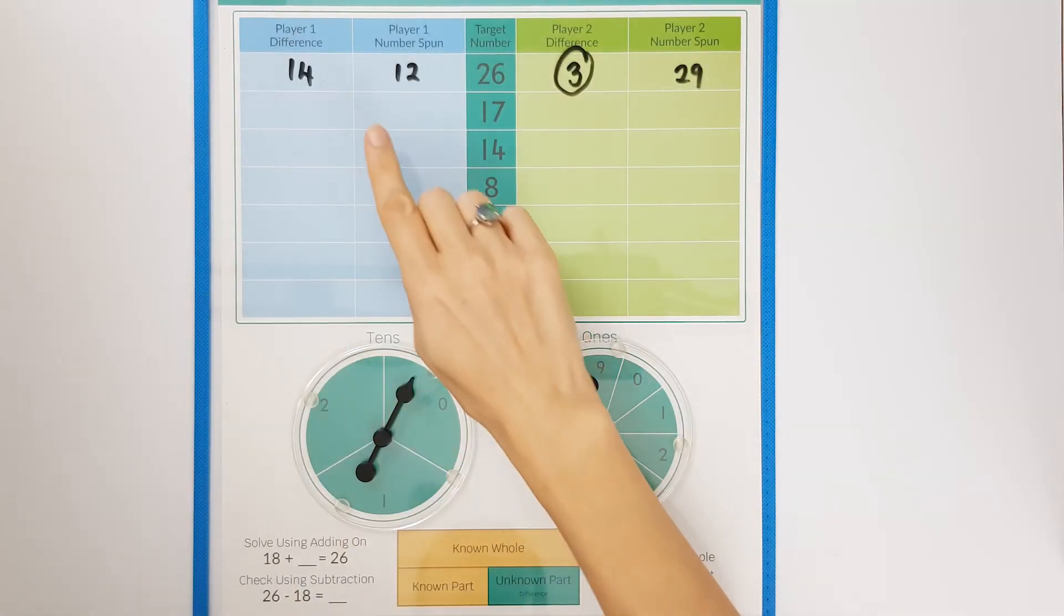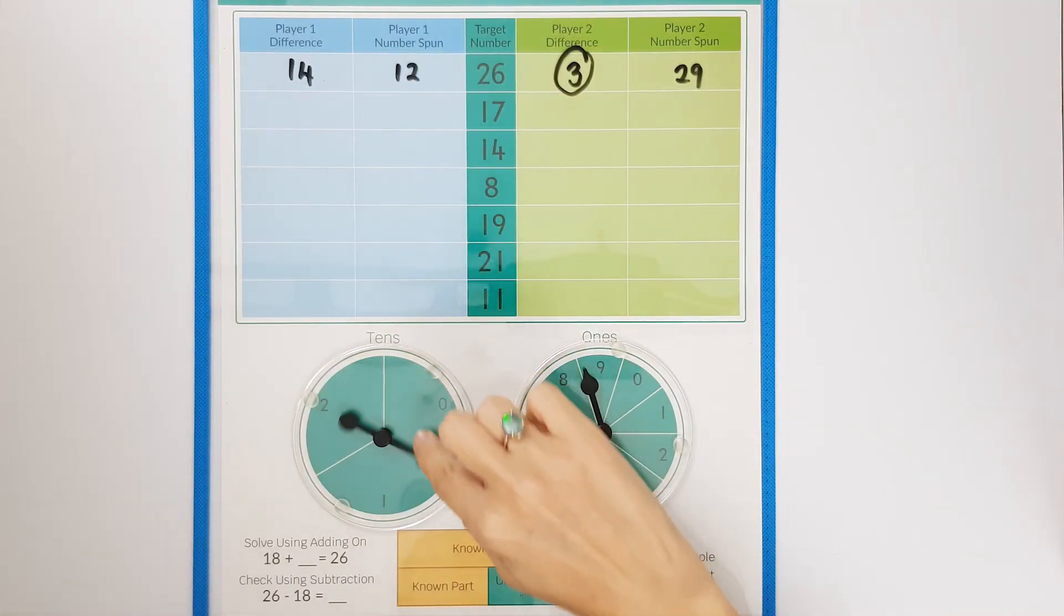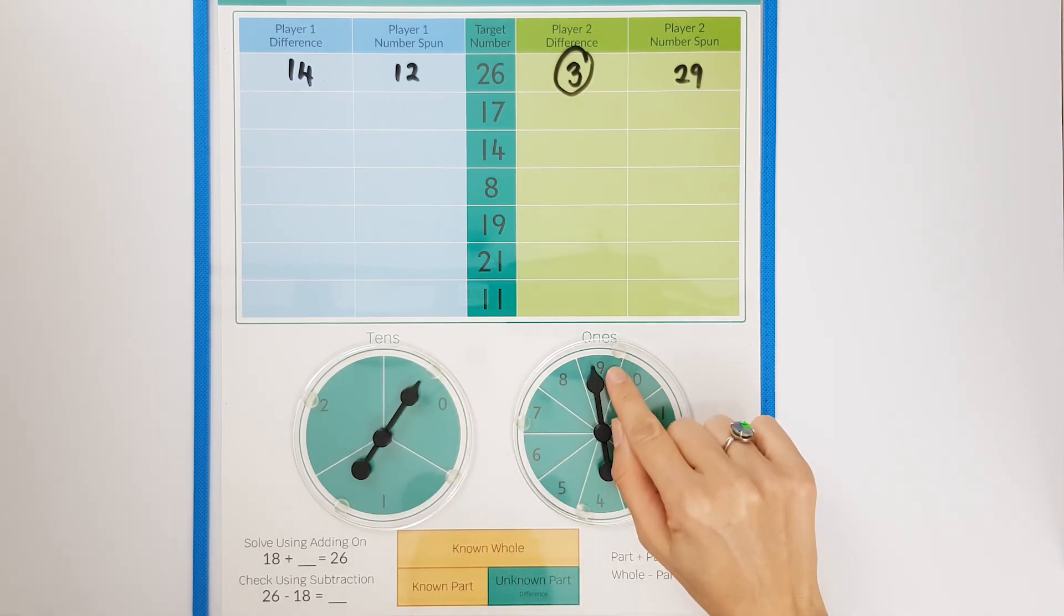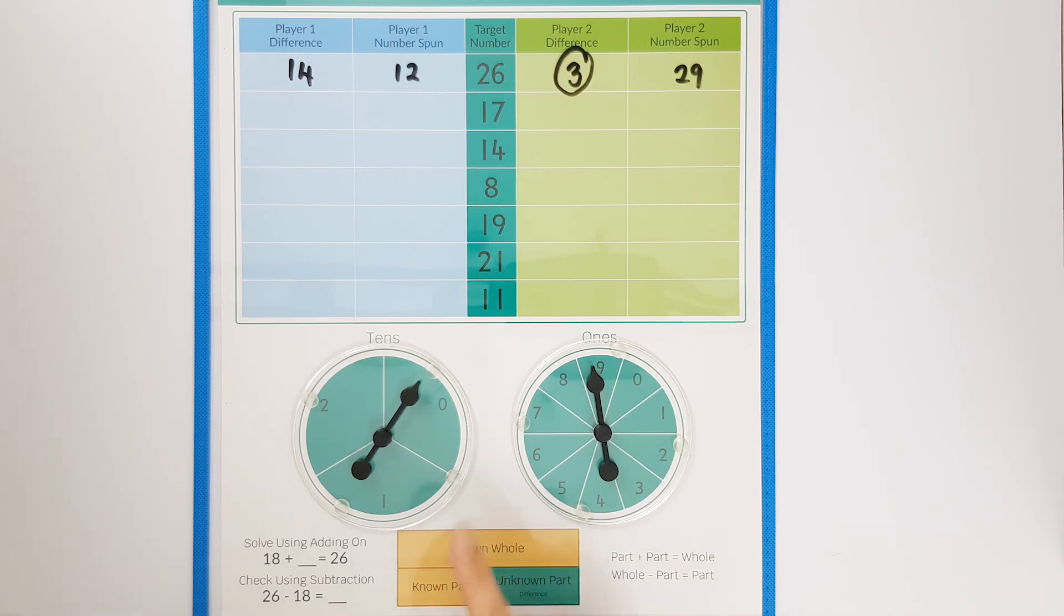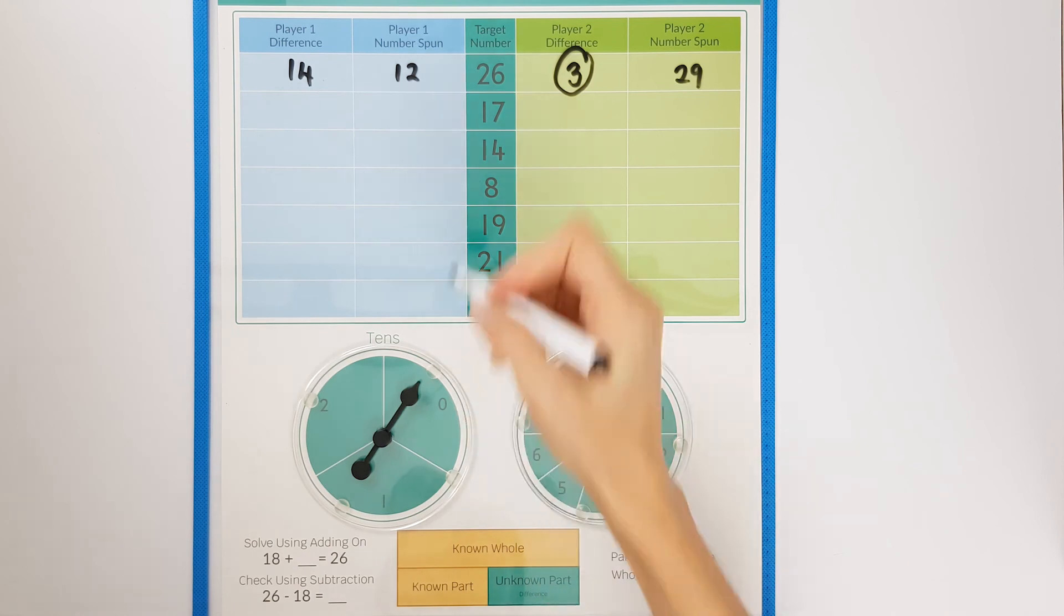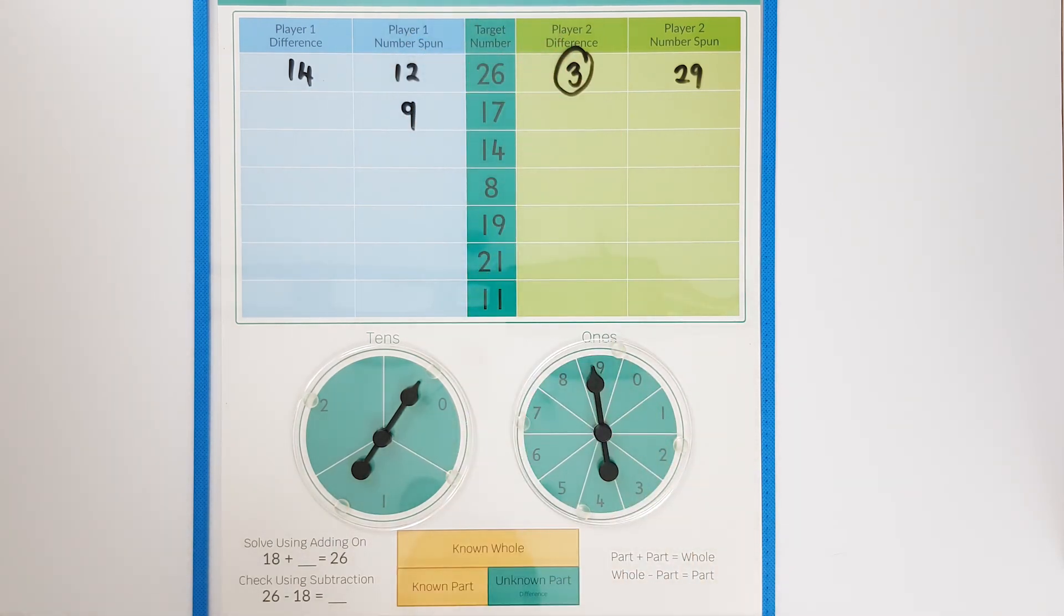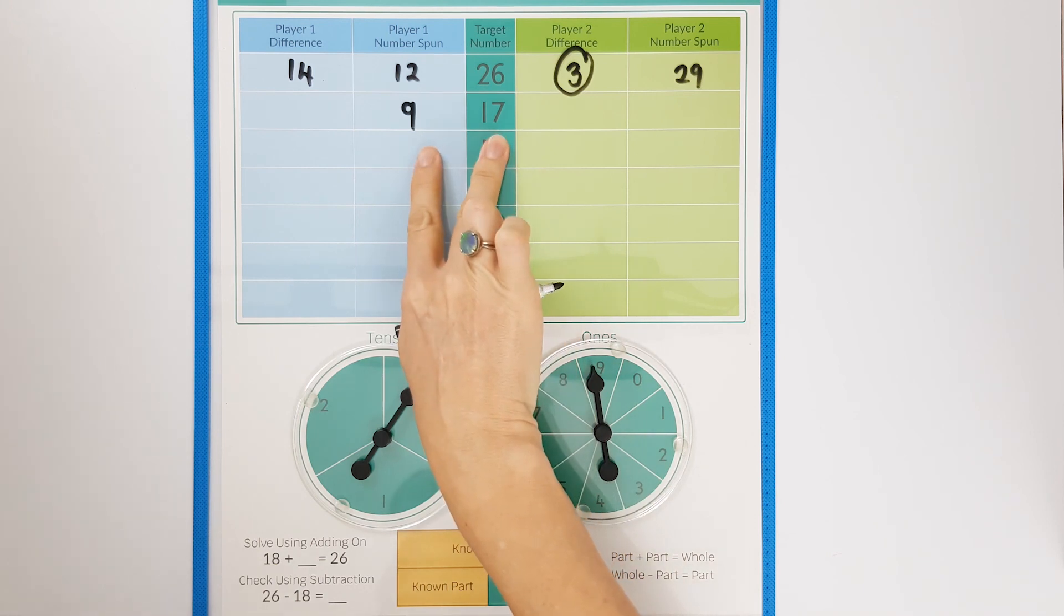I'm going to model one final example for player one. If they spun zero tens and nine ones, they say zero add nine equals nine and record this in their spun column. They calculate the difference between these two numbers which is eight.